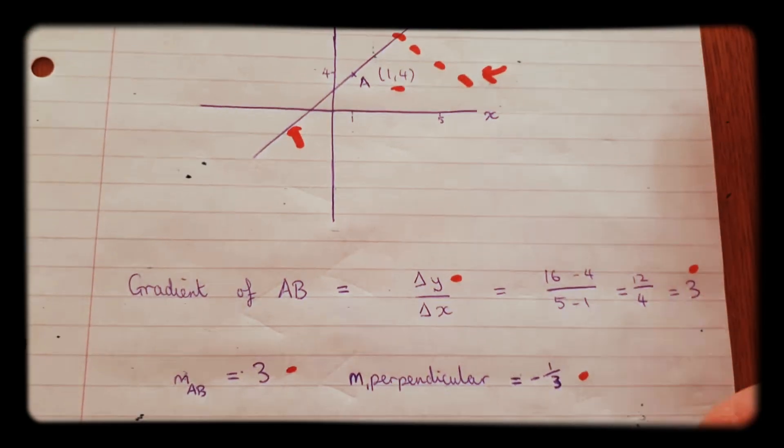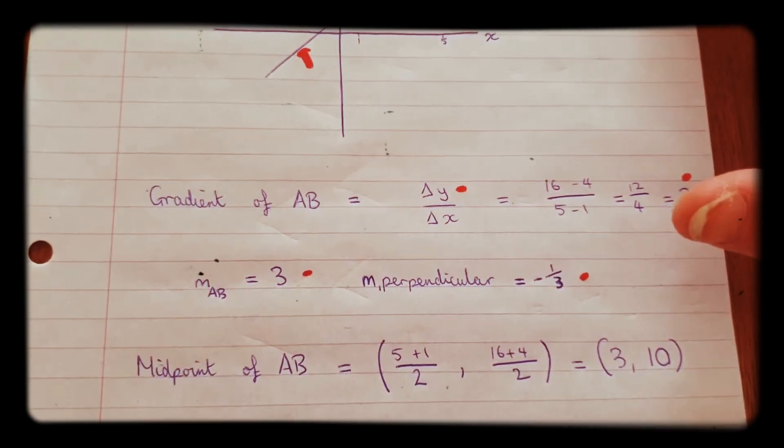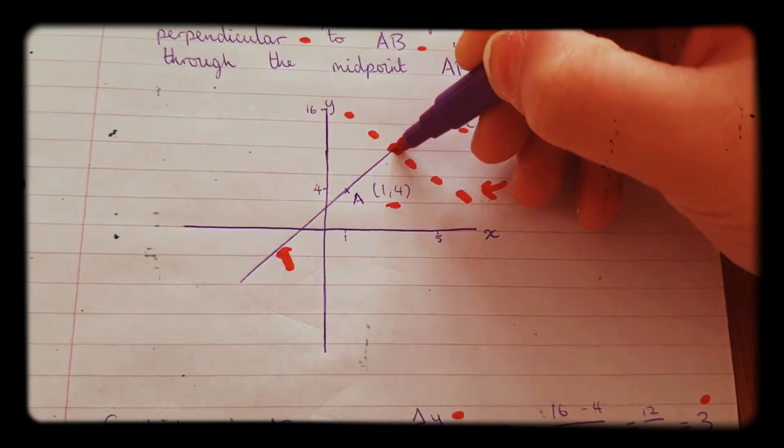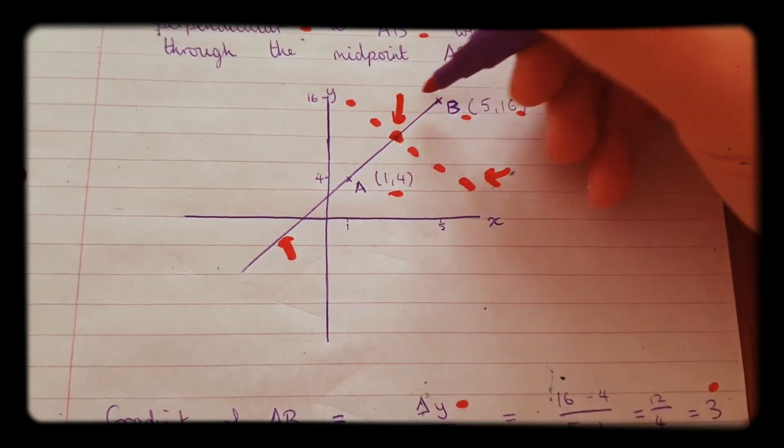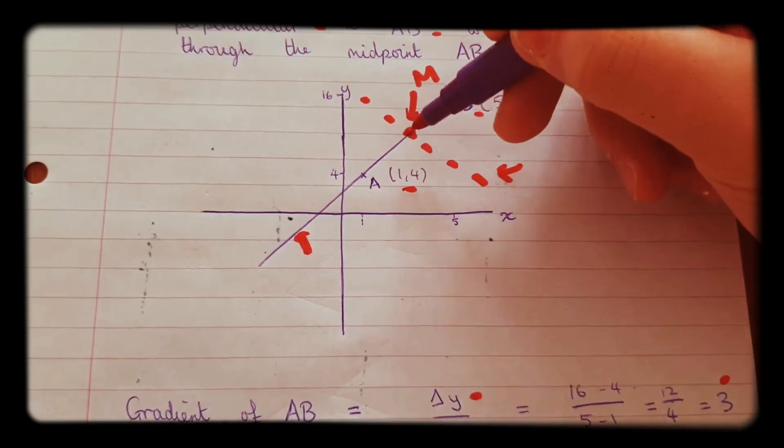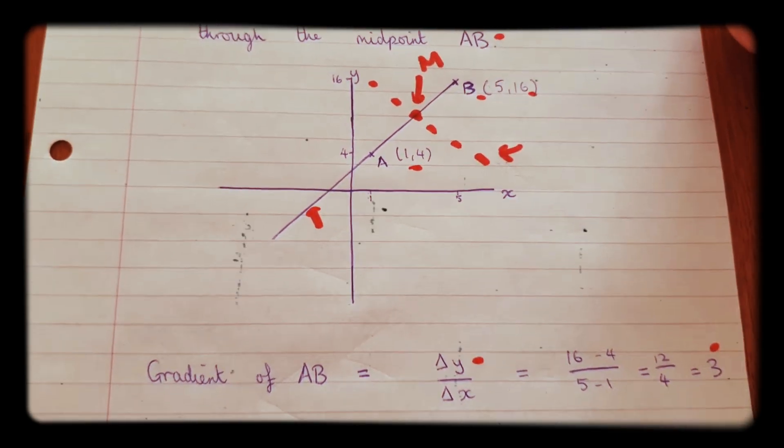So we've done that bit now. The next bit we need to figure out is the midpoint. Let's call that point M. The midpoint is going to go through that point. So what is that point? How do we work that out?